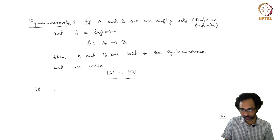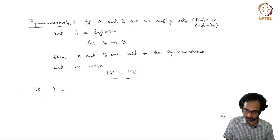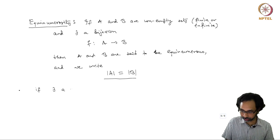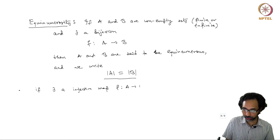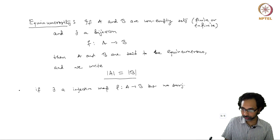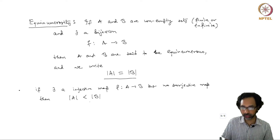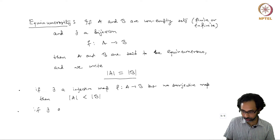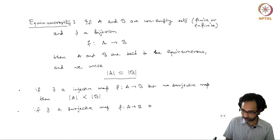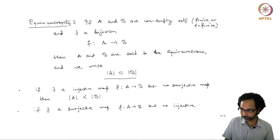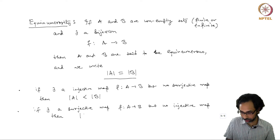If there exists an injective map f between A and B but no surjective map, then we write that the cardinality of A is strictly less than the cardinality of B. And if there exists a surjective map f from A to B but no injective map, then the cardinality of A is strictly greater than the cardinality of B.